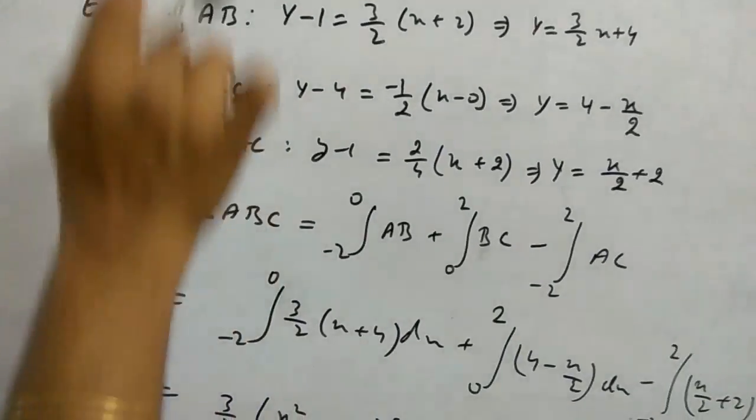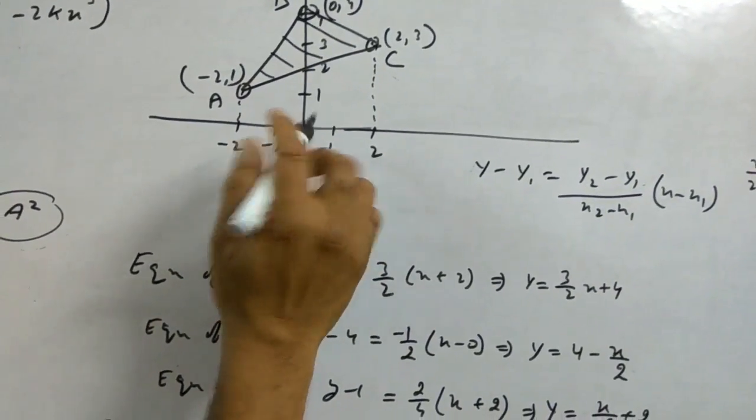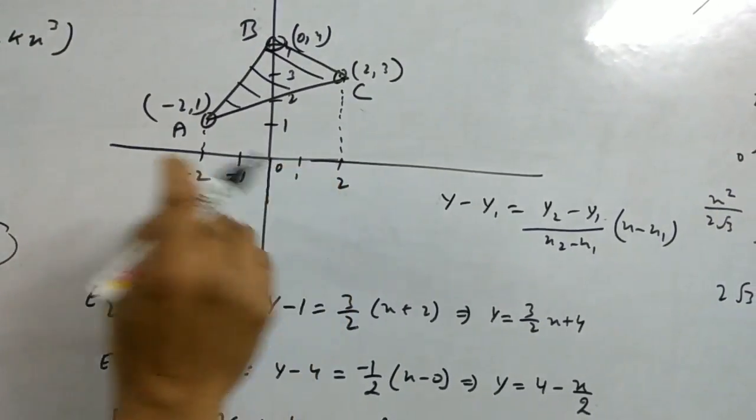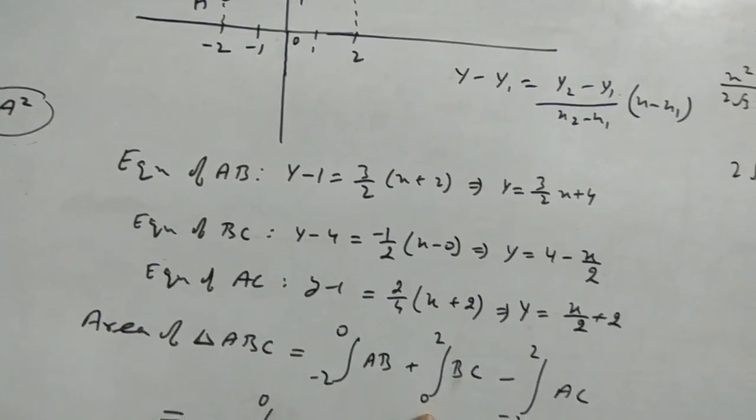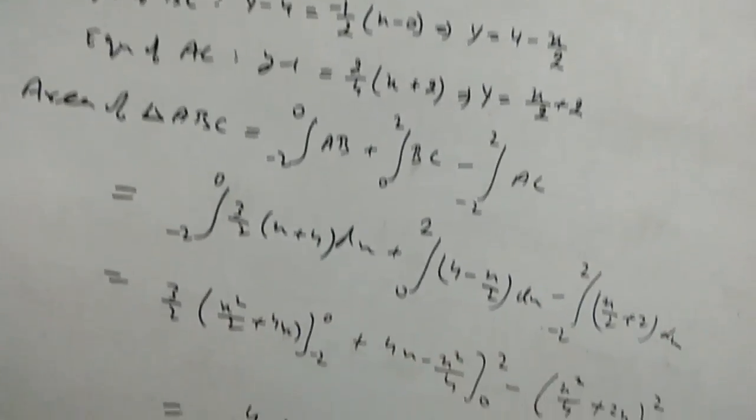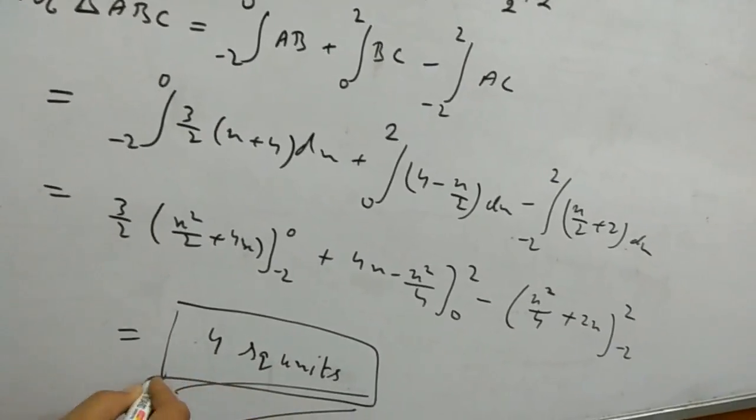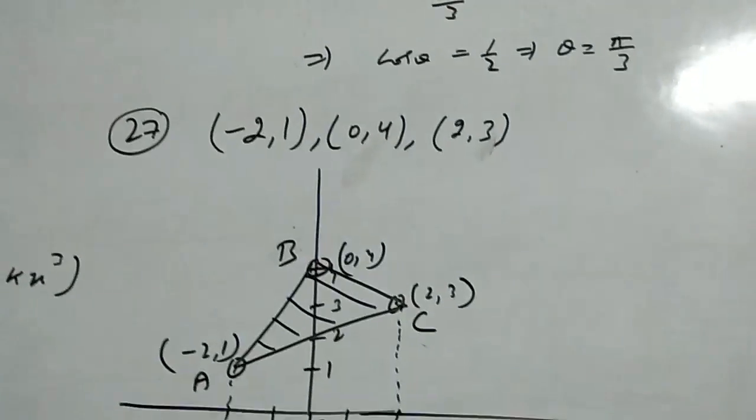The area will be from minus 1 to 0 for AB, plus 0 to 2 for BC. After integration, the answer is 4 square units. You can see all of this solution and check this solution.